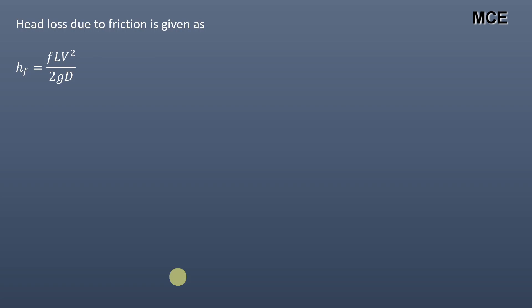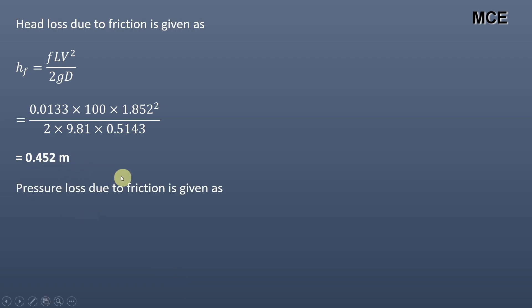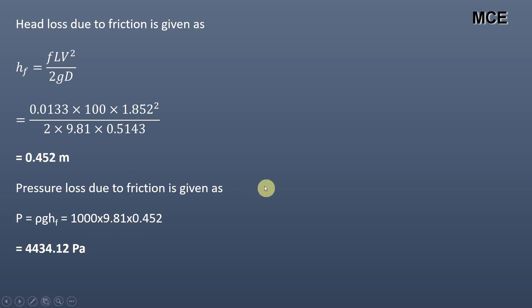Head loss due to friction is given as f into L into V square divided by 2gD. Putting values of f, L, V, g, and D, we get the head loss due to friction equal to 0.452 meter. Now the pressure loss due to friction is given as P equals rho g into hf. Putting values of rho, g, and hf, we get the pressure loss due to friction equal to 4434.12 Pascal. This represents the procedure for how we calculate the friction pressure loss in a non-circular pipe.